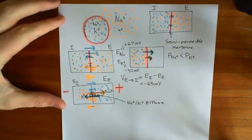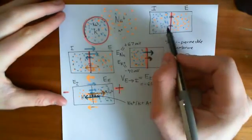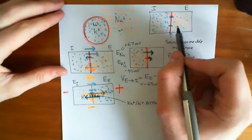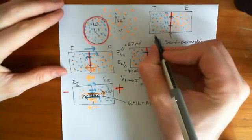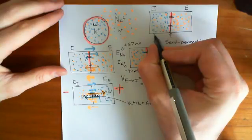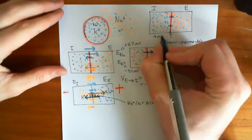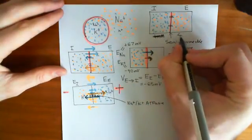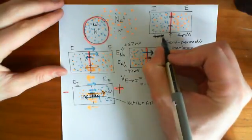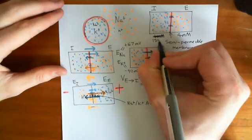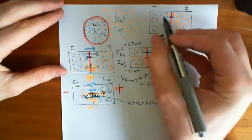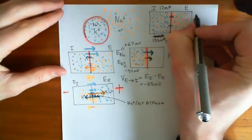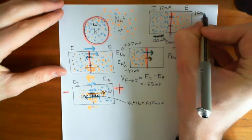What we've discussed so far is that you have these concentration gradients of sodium and potassium across the cell. The concentration of potassium in the extracellular compartment is around 4 millimolars, and the concentration of potassium in the intracellular compartment is generally around 155 millimolars. The concentration of sodium in the intracellular compartment is 12 millimolars, and the concentration of sodium in the extracellular compartment is around 145 millimolars.